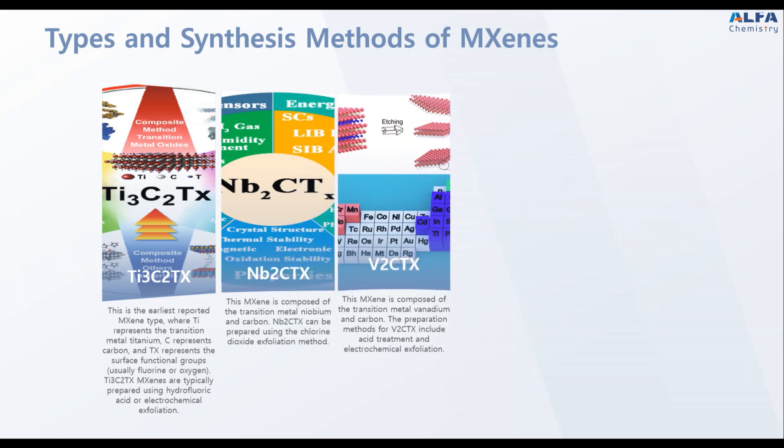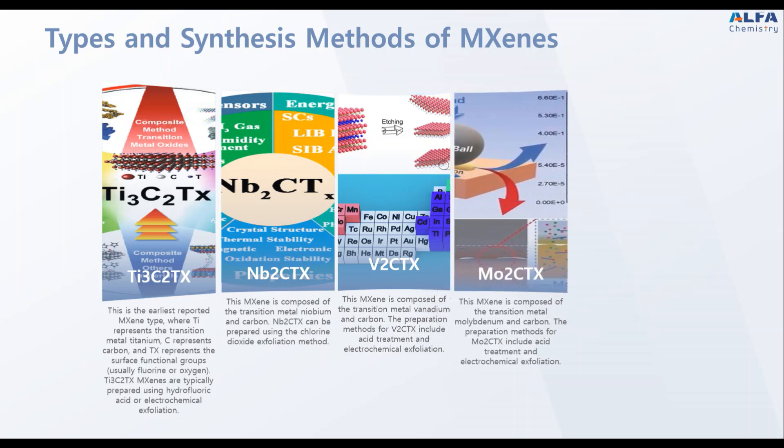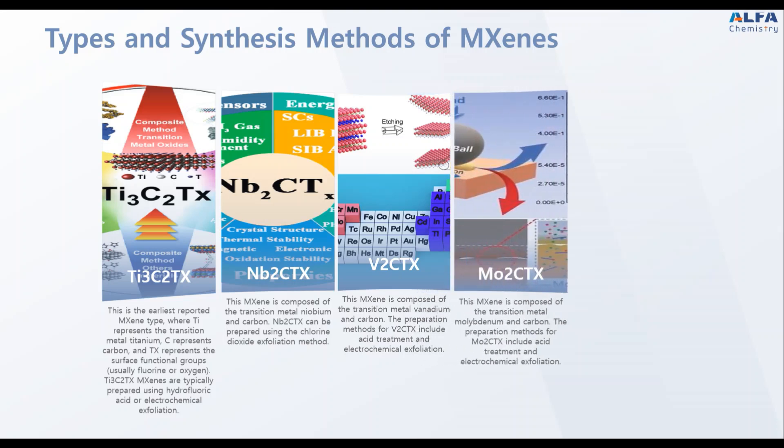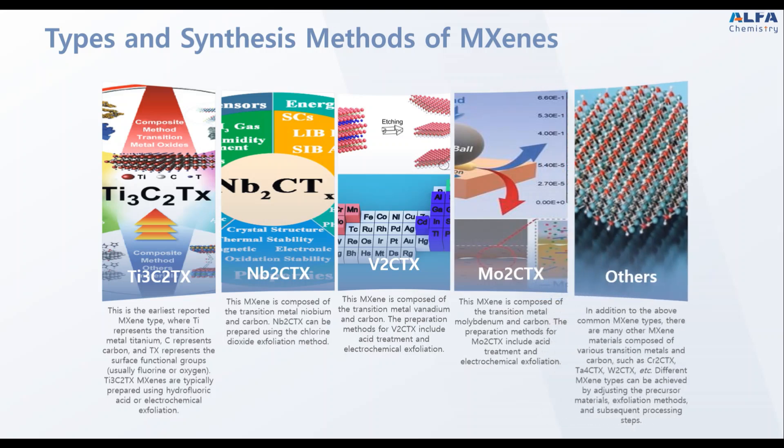V2CTx: This MXene is composed of the transition metal vanadium and carbon. The preparation methods for V2CTx include acid treatment and electrochemical exfoliation. Mo2CTx: This MXene is composed of the transition metal molybdenum and carbon. The preparation methods for Mo2CTx include acid treatment and electrochemical exfoliation.